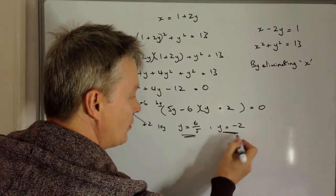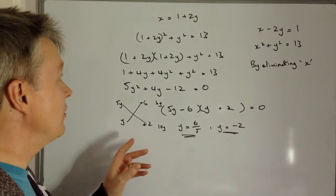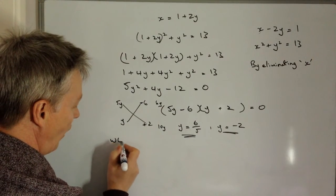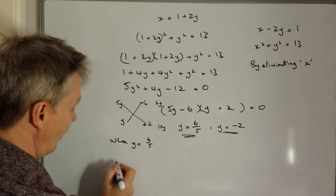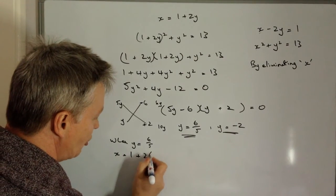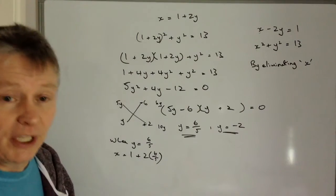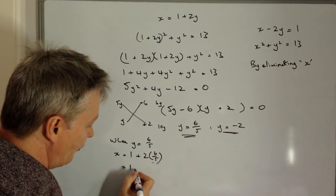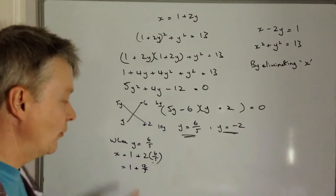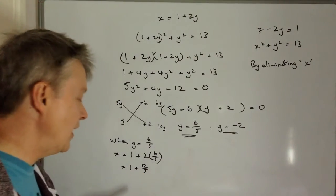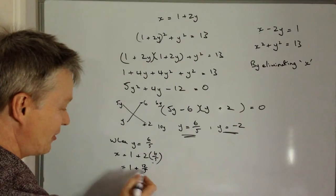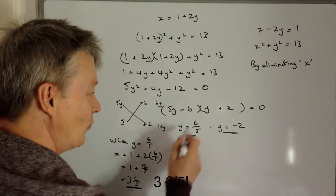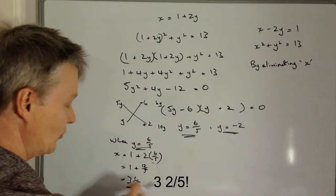And then really, it's a case of taking those two values of Y and substituting them into this equation. This is the easiest. So when Y equals 6 over 5, X equals 1 plus 2 times 6 over 5. So you need to be able to manipulate fractions a little bit there. So I've got 1 and then it's plus 2 times 6 over 5 is 12 over 5. Well, 12 over 5, I can make a mixed number which would be 2 and 2 fifths. So 2 and 2 fifths plus 1 is going to be 3 and 1 fifth. So when Y equals 6 over 5, X equals 3 and 1 fifth.